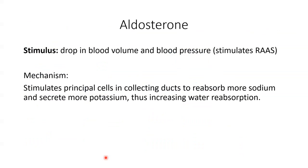Aldosterone is released by the adrenal cortex in response to a drop in blood pressure and is part of the renin-angiotensin-aldosterone system. It stimulates the principal cells in the collecting ducts to reabsorb more sodium and secrete more potassium. When there is more sodium in the blood, water reabsorption increases, which raises blood volume and blood pressure. Aldosterone works along the late distal convoluted tubule and collecting duct.